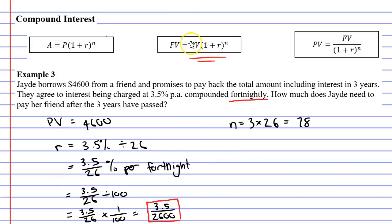Let's take our formula: FV equals PV times bracket 1 plus r to the power of n. Our present value was $4,600, the amount borrowed, and r is this fraction 3.5 over 2600, and we're going to put this to the power of n, which is 78.